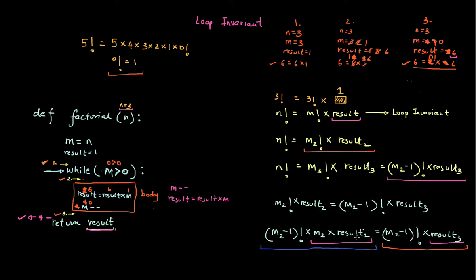Now what are m2 and result2? m2 and result2 are those values that were actually holding at this specific point in the loop — whatever m2 and result2 were at that point.